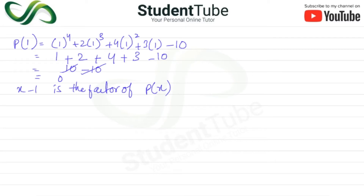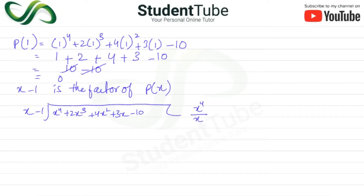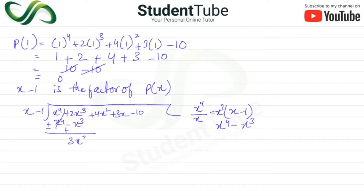So here we divide x⁴ plus 2x³ plus 4x² plus 3x minus 10 by x minus 1. Dividing x⁴ by x gives x³. We multiply x³ by (x minus 1) to get x⁴ minus x³. Subtracting, the x⁴ terms cancel and we bring down to get 3x³ plus 4x².